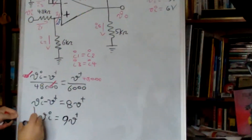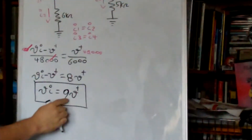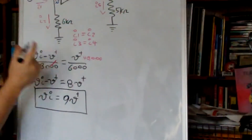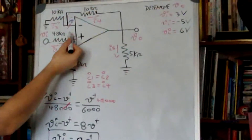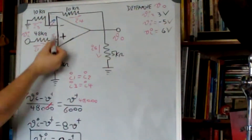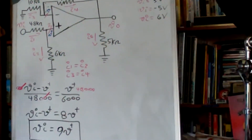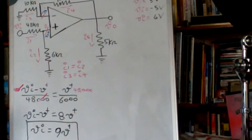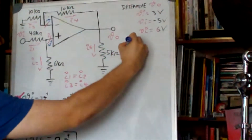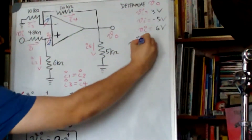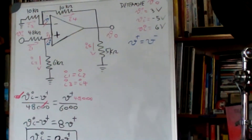We know that because this is an ideal amplifier there is a virtual short between these terminals — the potential is really close together — so V plus is equal to V minus. Let's keep this in mind.